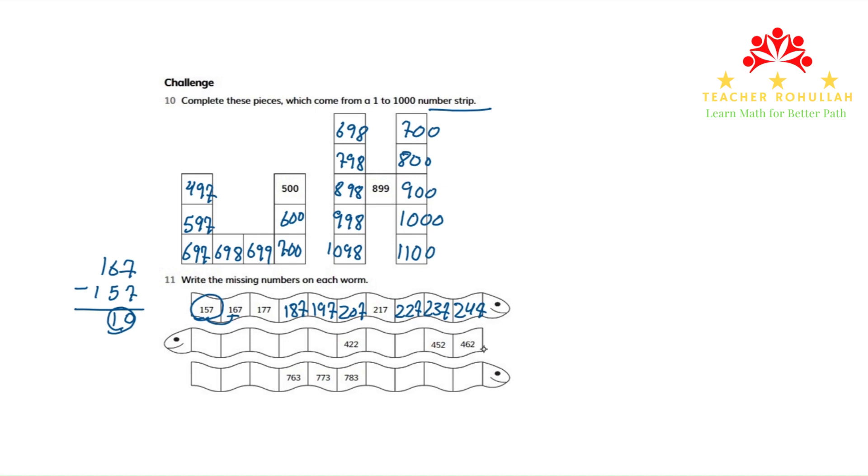The second worm moves from right to left. So we have 462 on the right and to the left of it we have 452. Each time we have to subtract 10 from the previous number to get the next number. Now 462 minus 10 is 452. 452 minus 10 will be 442. 442 minus 10 will be 432.